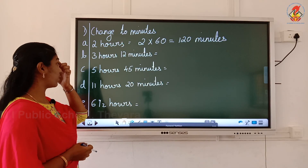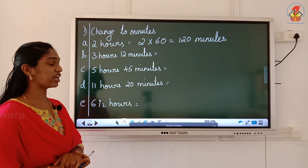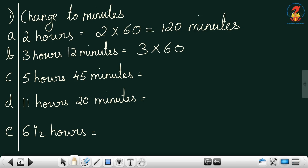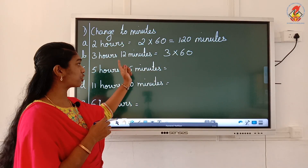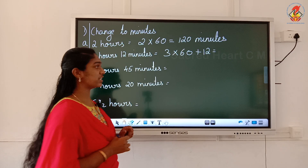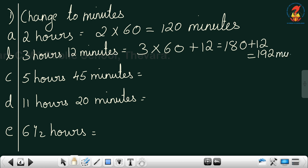Here is a different type: 3 hours and 12 minutes. 12 is already in minutes, so I do not need to convert that — I only need to convert 3 hours. So I write 3 into 60, then add the 12. 3 into 6 is 18, so 3 into 60 is 180, plus 12 equals 192 minutes. Do not forget to write the unit — it is very important.